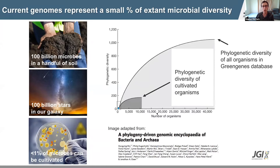One of the analyses they did in the paper was that they looked at the total phylogenetic diversity of organisms in the green genes database, which is simply a database of ribosomal RNA sequences derived from both environmental samples as well as cultivated isolates. You can see that the total phylogenetic diversity is denoted at the top of this curve, and the darker gray curve is the phylogenetic diversity of all organisms isolated in pure culture, showing a big discrepancy.